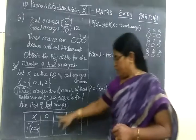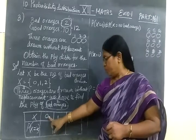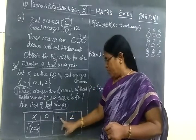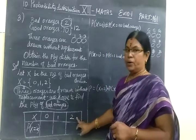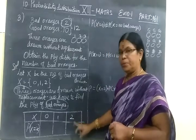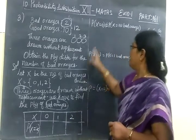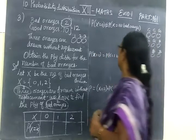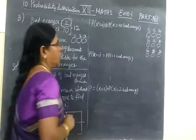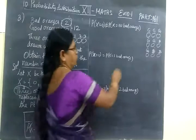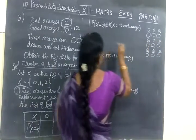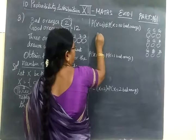In that may be 0, that means no bad orange, 1 bad orange, then 2 bad oranges. Totally 2 only. So first we are finding P of X equal to 0, that is X equal to no bad oranges. Here everything good. So no bad oranges means everything good.